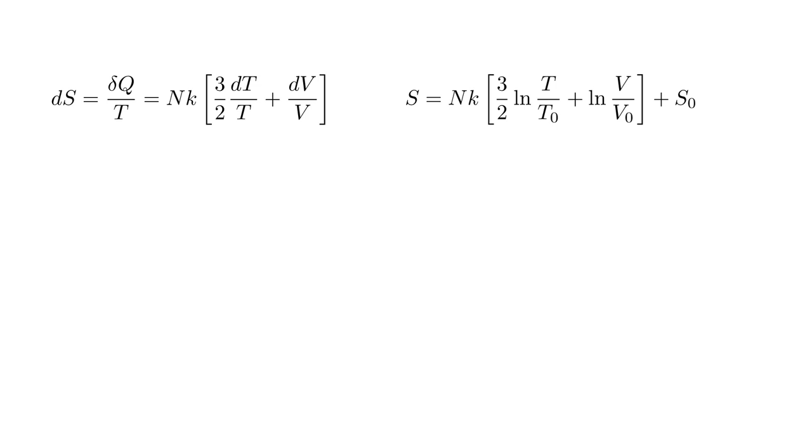The log of one is zero, so when T equals T zero, and V equals V zero, S equals S zero. Therefore, if we can determine the entropy S zero at some temperature and volume T zero and V zero, this expression gives us the entropy of the gas for any other temperature and volume. Using properties of logarithms, we can express this in the more compact form: S equals NK natural log of the quantity T over T zero to the three-halves power, times V over V zero, plus S zero.